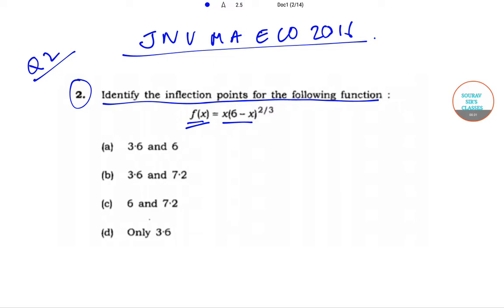The options are: (a) 3.6 and 6, (b) 3.6 and 7.2, (c) 6 and 7.2, and (d) only 3.6. So now let's begin.